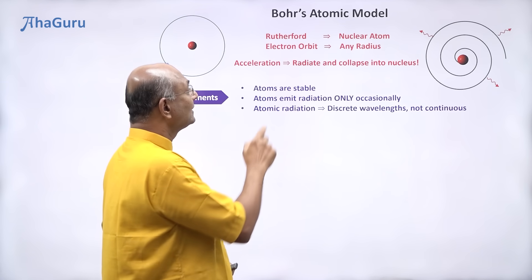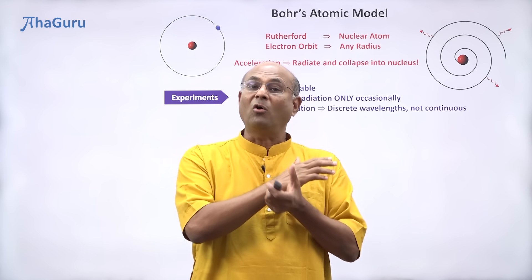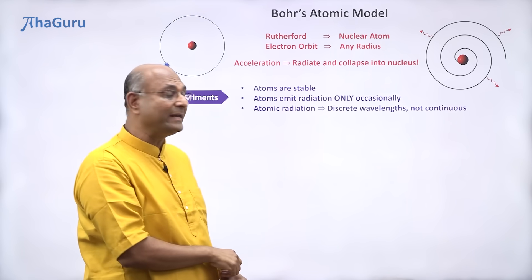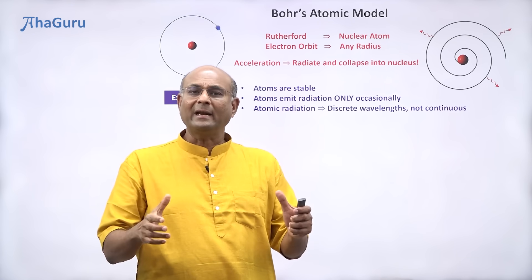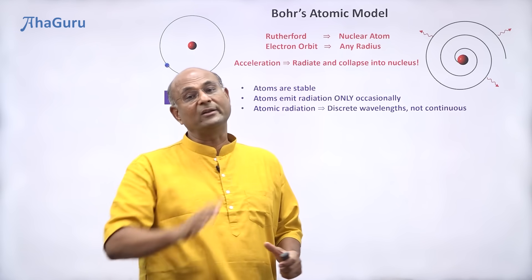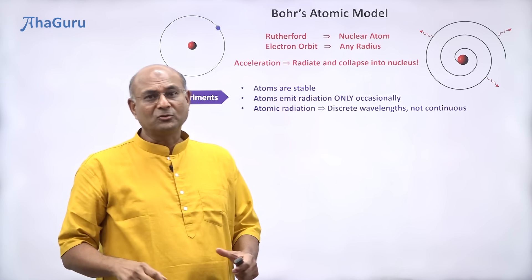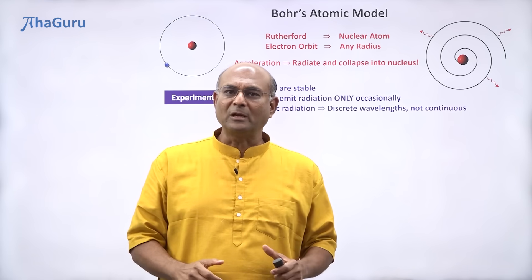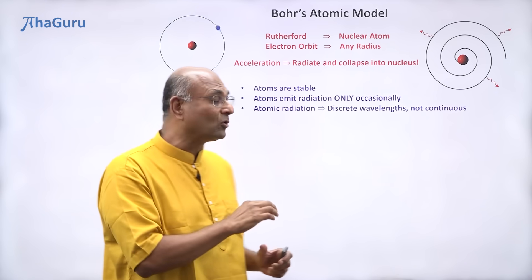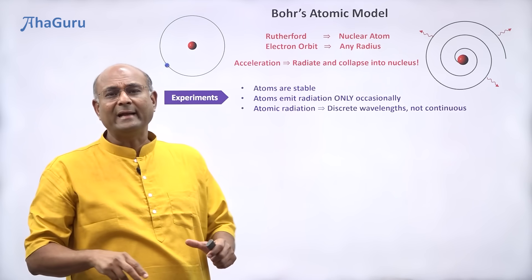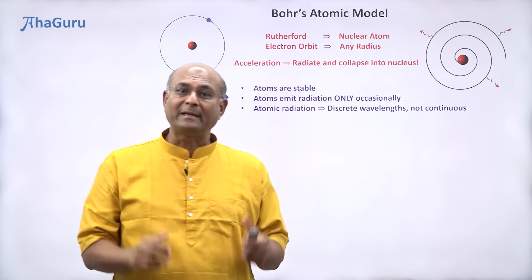One more thing: this kind of spiraling in will mean that the radiation that comes out will have to be continuous at all wavelengths. But actually, atomic radiations turn out to have discrete wavelengths — atoms only emit radiation at specific wavelengths. So the experimental evidence contradicts Rutherford's model. For a few years, scientists were very confused about how to resolve this contradiction, because Rutherford's alpha scattering experiments definitely showed there was a central nucleus, but the model obviously violated what was experimentally observed.